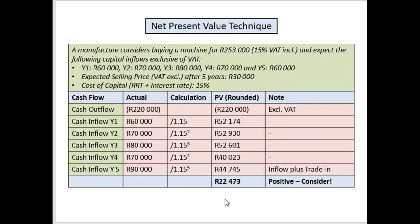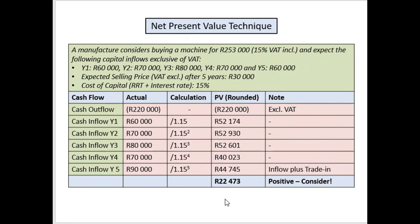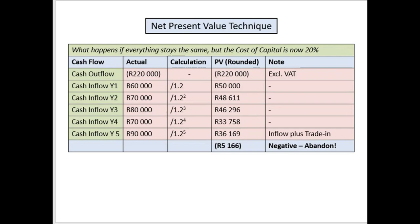Because there I had a positive value and there I had a negative value. Now here we get the internal rate of return. Let me just say that this is an assignment topic — I've not seen it in a test yet and I've never seen it in the exam. So they expect you to do this only as part of the assignment. With one positive and one negative value we can calculate the internal rate of return. When we used the net present value technique: fifteen percent yielded a positive value, twenty percent yielded a negative value.